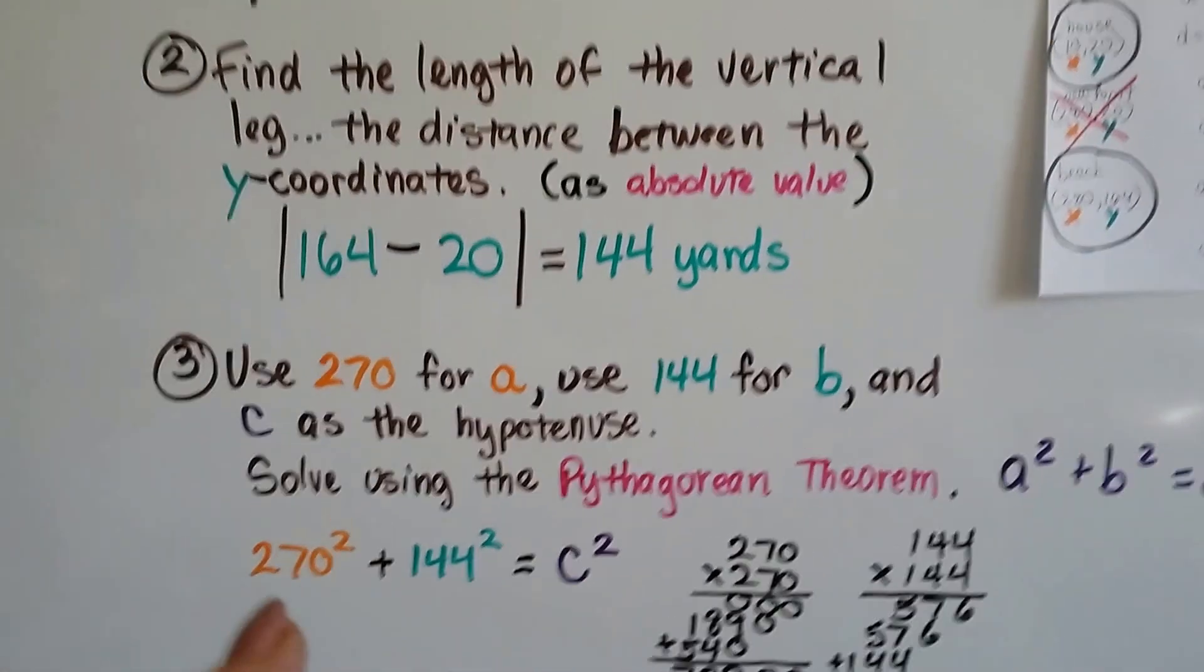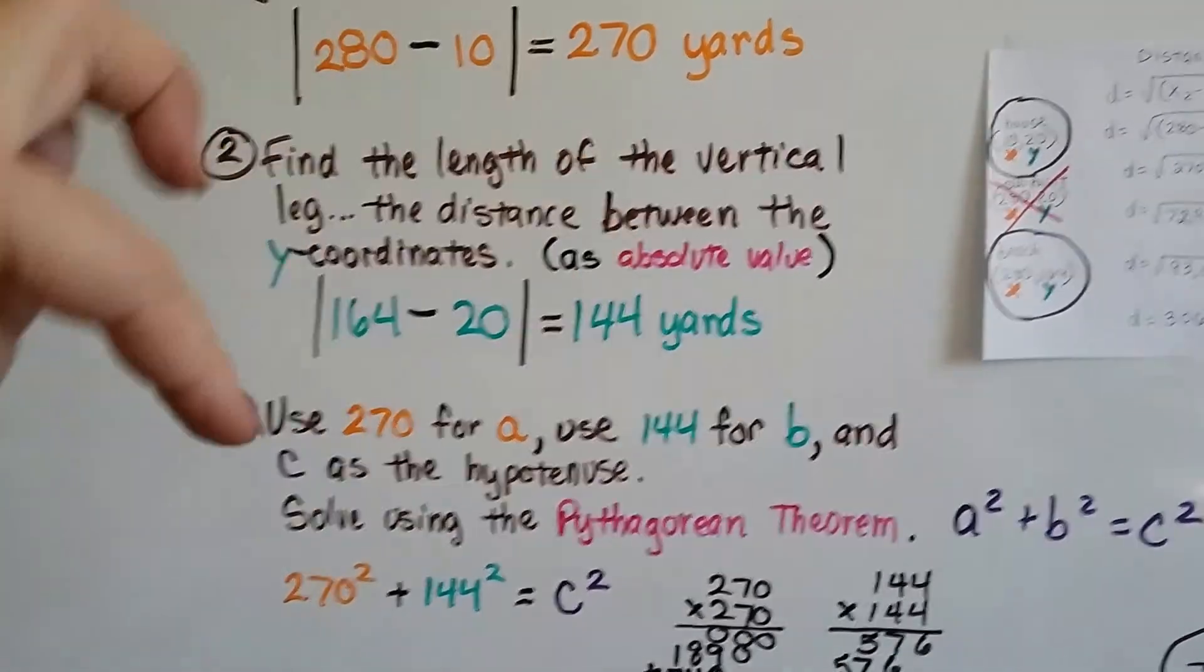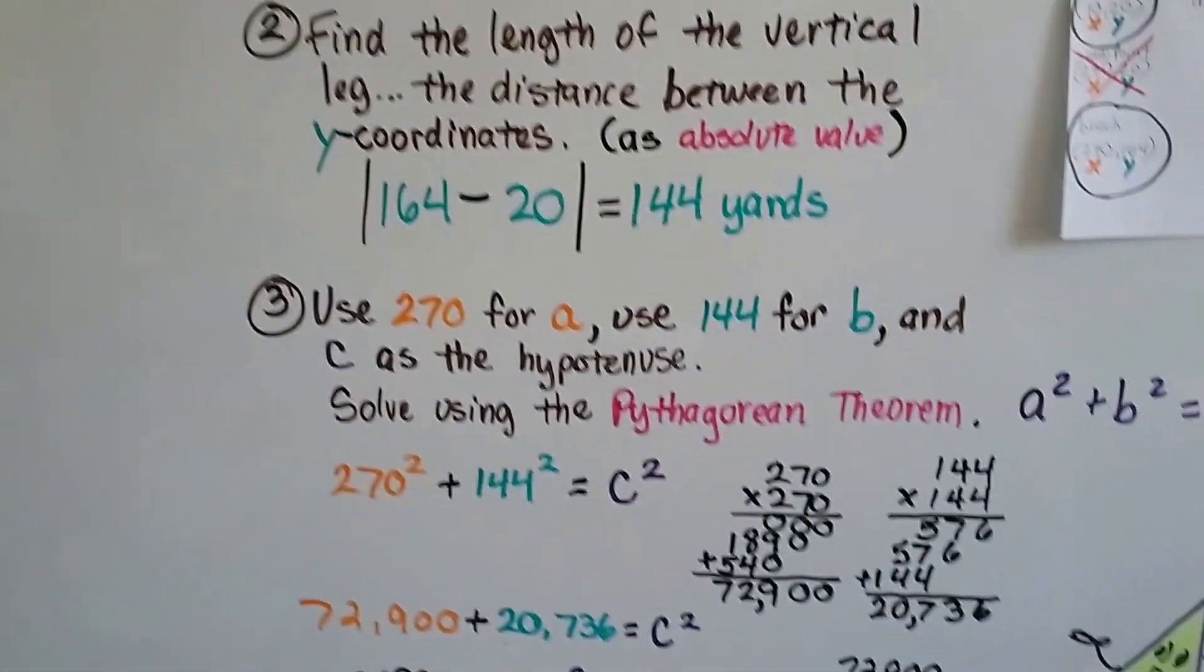So we're going to use the 270 as a and the 144 for b, and c is going to be the hypotenuse. That's going to be the distance between the house and the beach that she's trying to find.